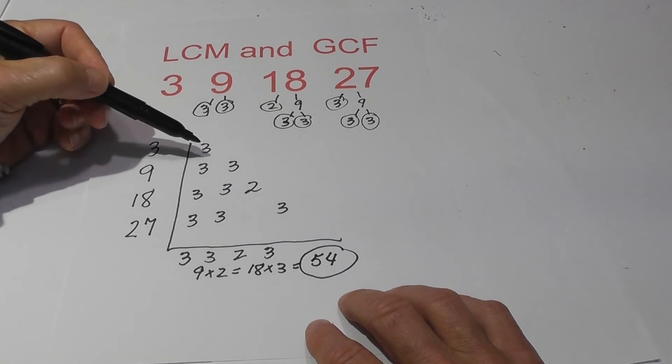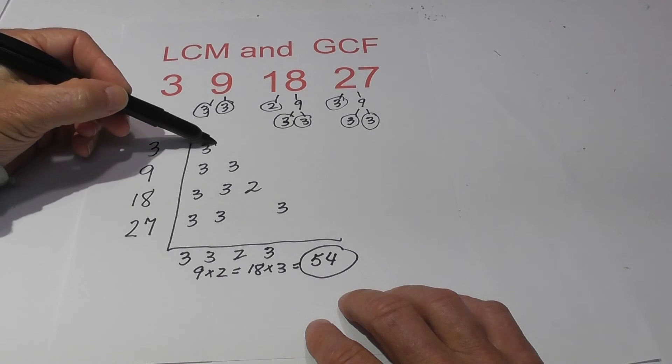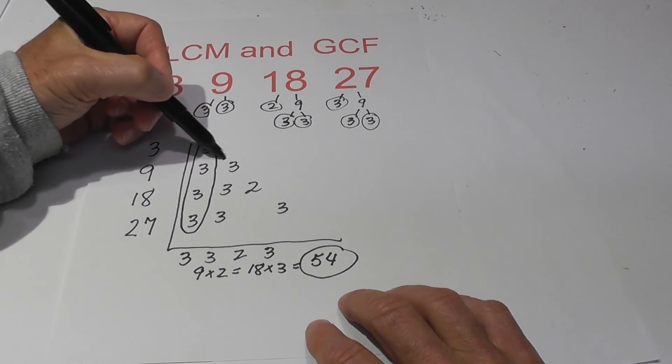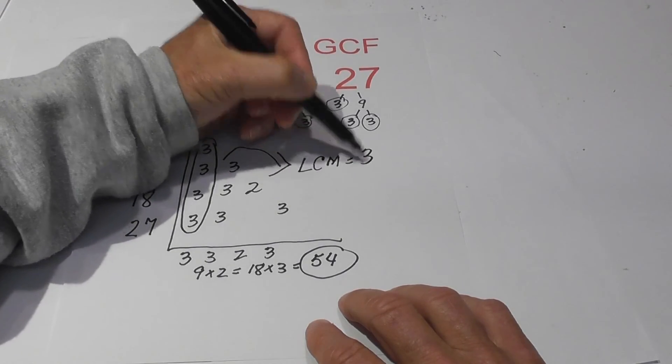And now, for the GCF, there's only one number that is found in all four of these. Notice all four. So the GCF equals three.